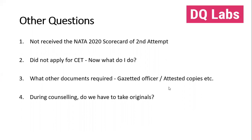Another question we've received is about what other documents are required. Please go through the Karnataka CET cell brochure available on the website. They say get documents attested by a gazetted officer — please reach out to your school to find out who the gazetted officer is. If you come under reservations — sports quota, PWD, SC, ST, or any other reservation — get those documents in order.